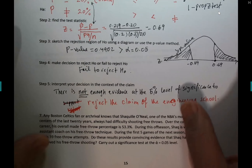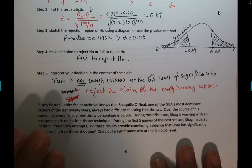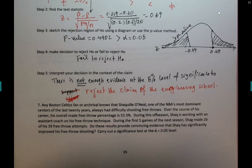I think this is real data about Shaquille O'Neal. Any Boston Celtics fan or basketball fan knows that Shaquille O'Neal, one of the NBA's most dominant centers for the last 20 years, always had difficulty shooting free throws. Over the course of his career, his overall free throw percentage is 53.3%.